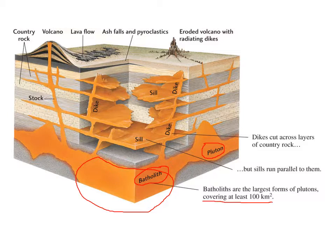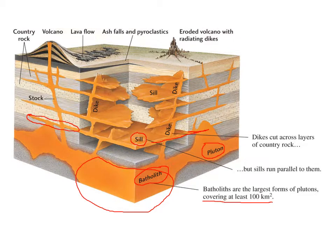If a pluton is tabular, it's called a sill. A sill is where you have magma intruding between sedimentary rock layers. If you have a weakness between those two rock layers, you get a sill, with igneous rock forming in between.